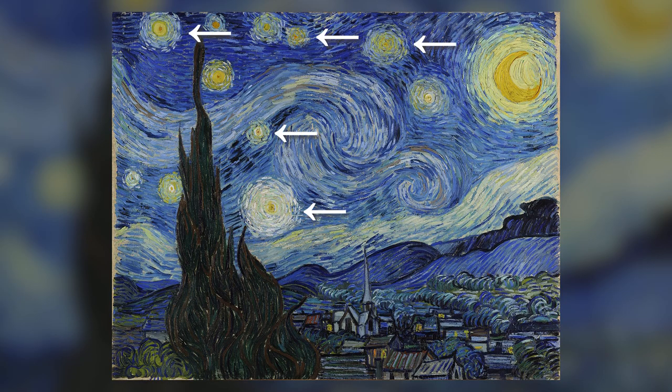For example, our network might recognize that Van Gogh paints swirly patterns when painting yellow objects. You might not know that those are stars or suns, but it still recognizes those patterns as something in the style.